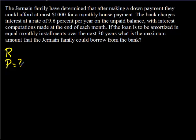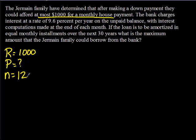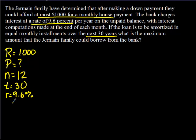Looking at the problem, we know the monthly payment is $1,000, so capital R equals $1,000. Since it's a monthly payment, n equals 12. It's going to be over 30 years, so t equals 30. And the interest rate is 9.6%, so lowercase r equals 0.096.